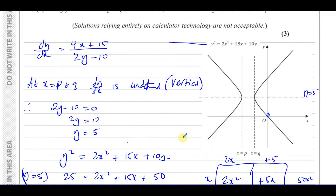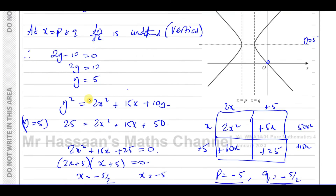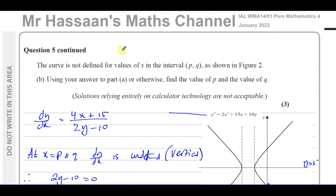Those are the values of P and Q. The key to answering this question is recognising that when you have a vertical line, its gradient is undefined, which happens when the denominator of the gradient function equals 0. That's how we found that y equals 5 at those points. Other questions from this paper and from the topic of implicit differentiation from P4 can be found in the playlists. You can subscribe to the channel and watch a video explaining how to use the channel efficiently. Thank you for watching and see you soon.